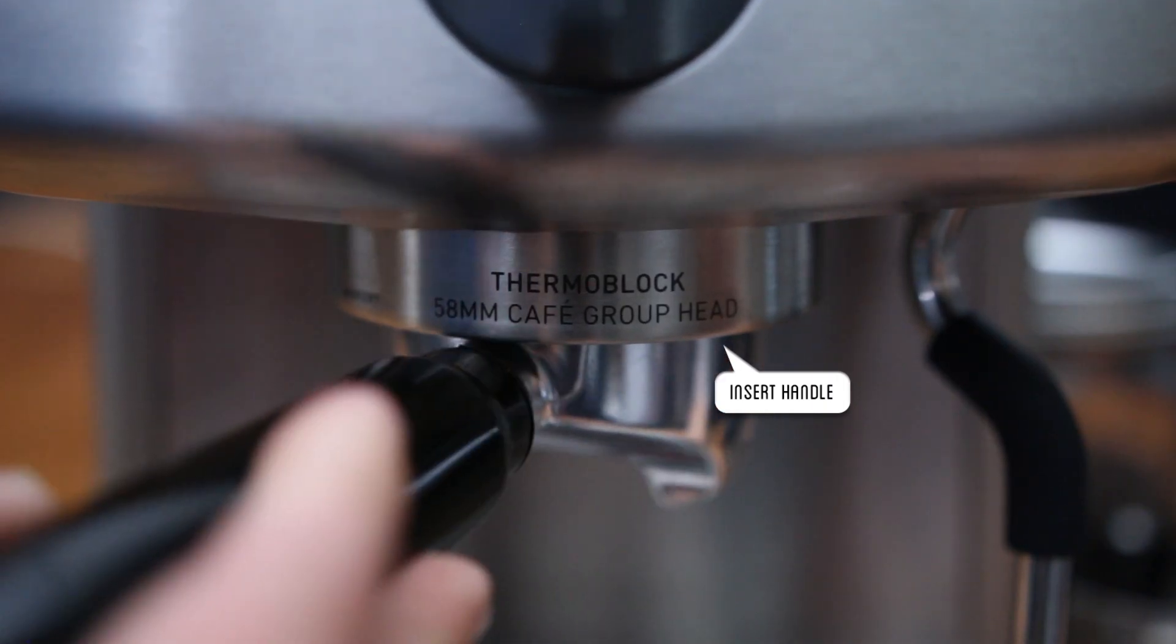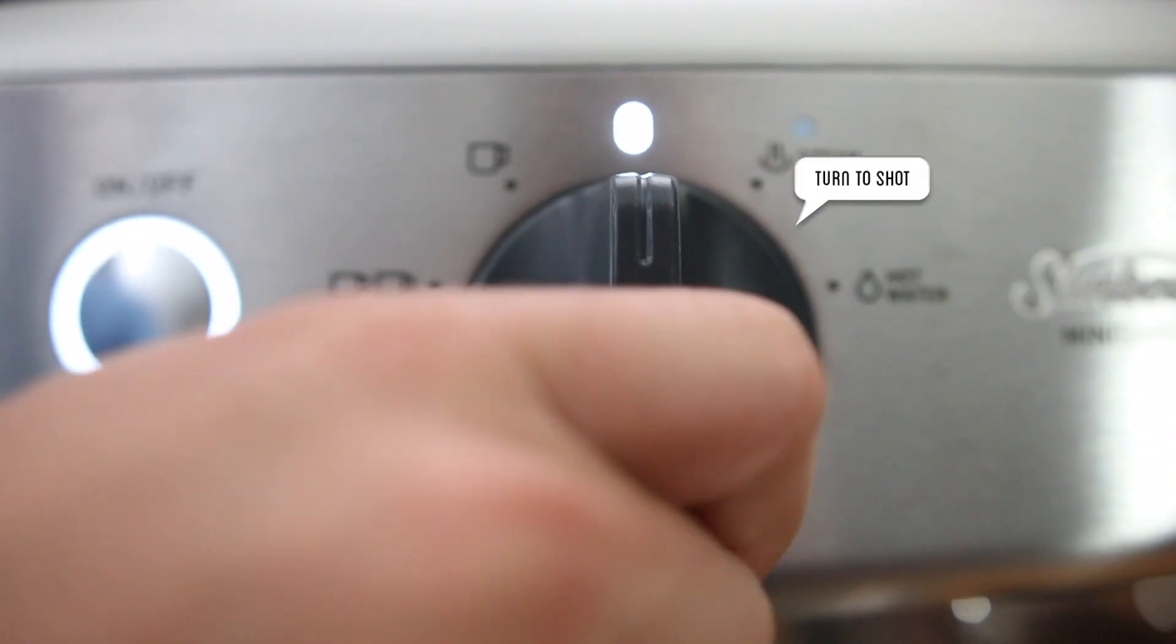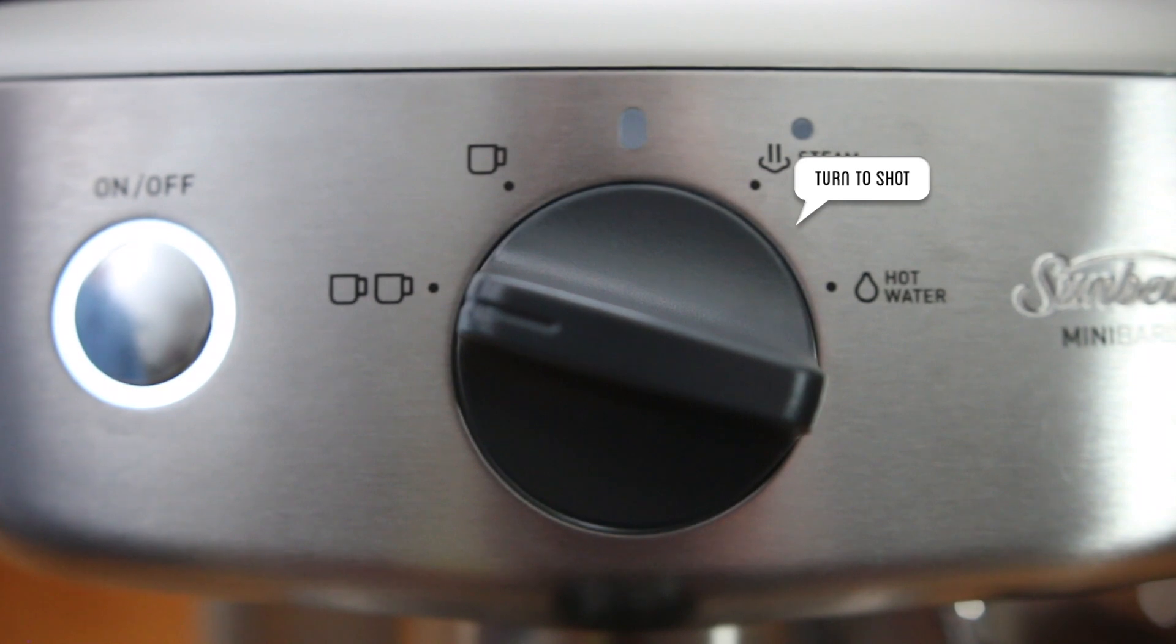Insert the group handle and gently lock it into place then switch the dial to either single or double cup. I like my coffee strong so I'm going to use the double cup basket.